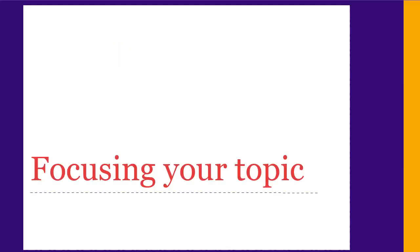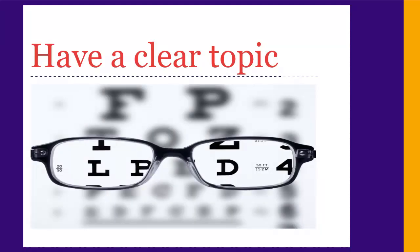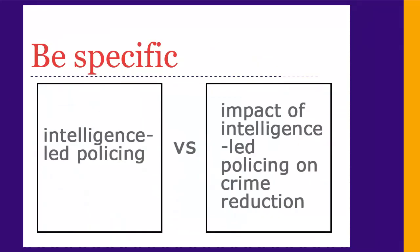Before you start searching, you need to have a good, focused topic. Make sure your topic is narrow and specific. If it's too broad, you'll find too many issues to summarize easily for your executive summary. For example, instead of searching for intelligence-led policing, think of focusing on one aspect or example of that topic, like its effects on crime reduction.